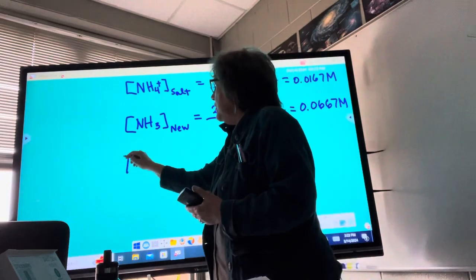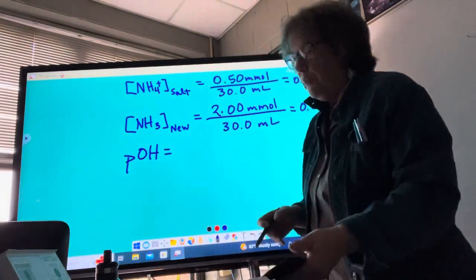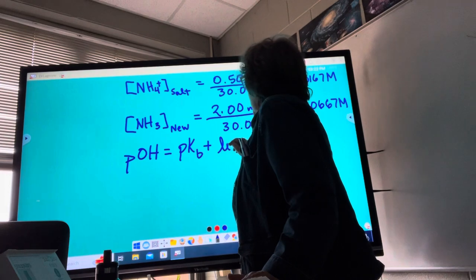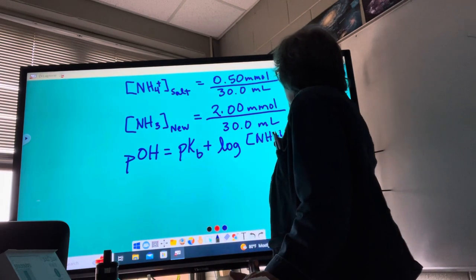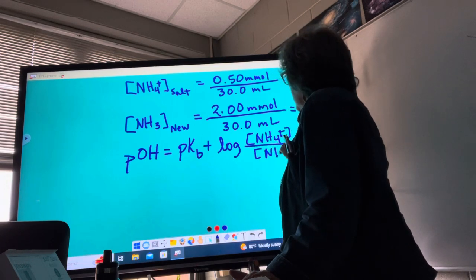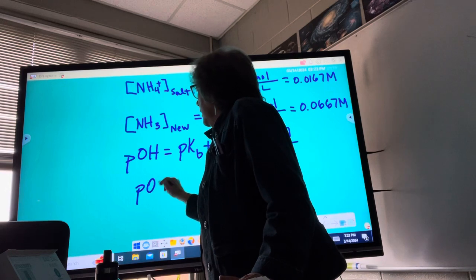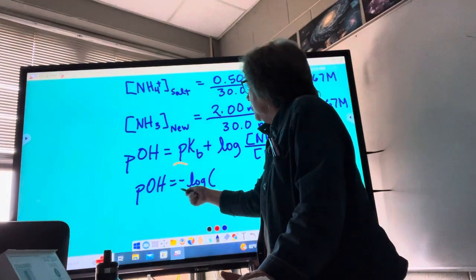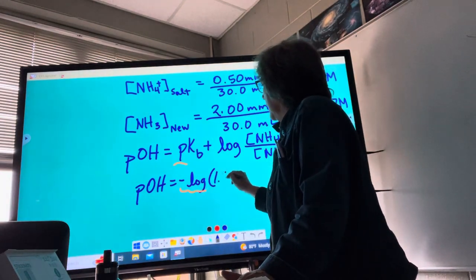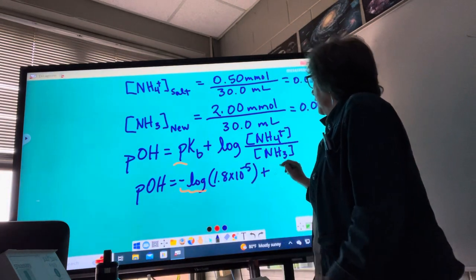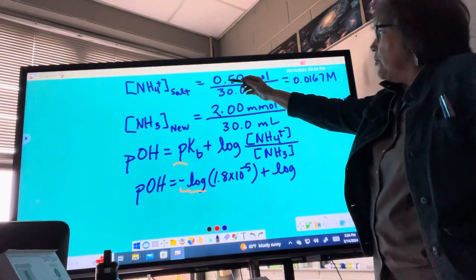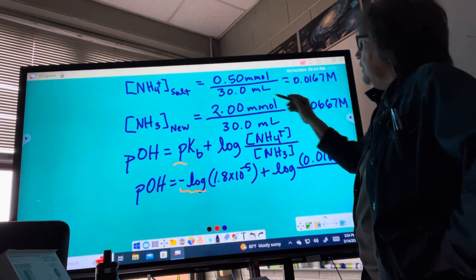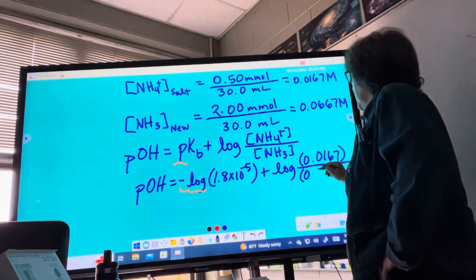So now if we do the POH from Henderson-Hasselbalch, and that's on your equation sheet, you don't have to memorize it, equals the PKB plus the log of the conjugate, which in this case is the ammonium ion, over the base. All right, and there we have it. So POH equals negative log of the KB, which is, that's what little p means, is negative log. Remember, little p means negative log. 1.8 times 10 to the negative 5, plus the log, I need the salt concentration, which is 0.0167, divided by the ammonia concentration, which is 0.0667.